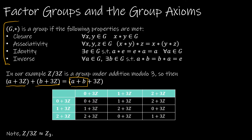Associativity is met because addition mod 3 is associative. The identity is 3Z, or 0+3Z. For inverses, 0 is its own inverse, and 1+3Z and 2+3Z are each other's inverses because their sum results back in the identity.